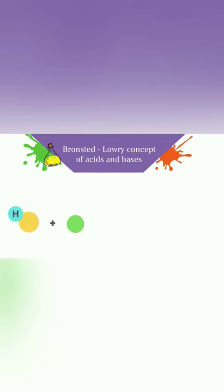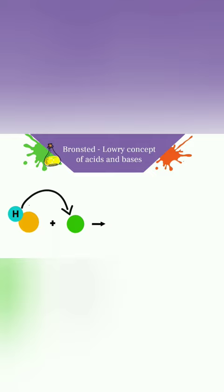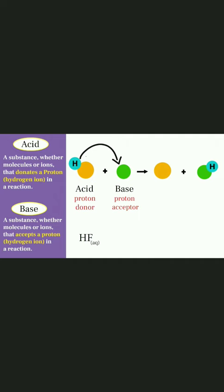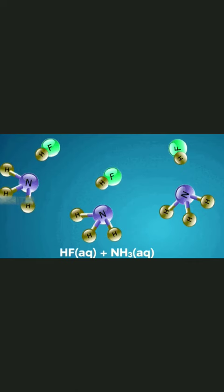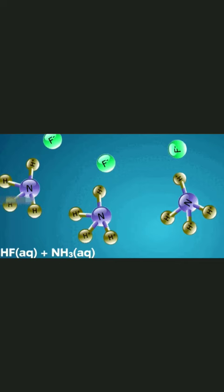In their definition, Brønsted and Lowry rely on the transfer of the hydrogen ion — the proton — between substances during a reaction. For example, when hydrofluoric acid reacts with ammonia, as we see, hydrofluoric acid, according to the definition of Brønsted and Lowry, will donate a proton to the ammonia molecule, producing a positive ammonium ion and a negative fluoride ion.